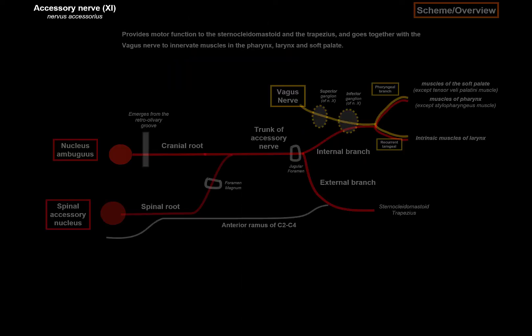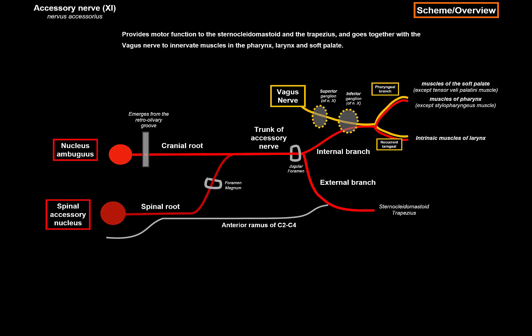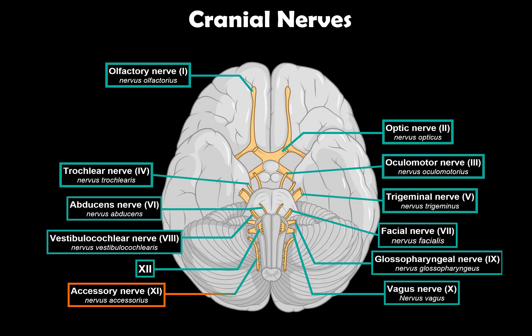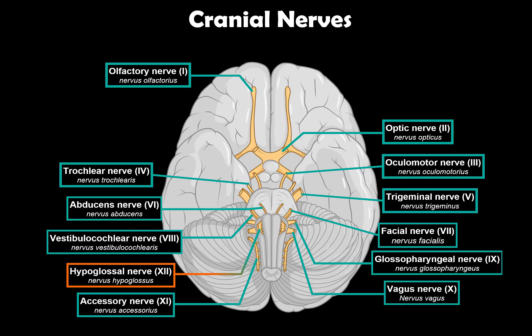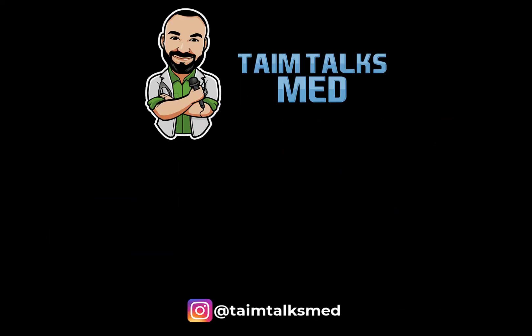That was everything for the accessory nerve. Here again you see the scheme — it's just schematic, not exactly anatomically correct, but I hope it helps you gain a good understanding of this nerve. We've now covered the accessory nerve. The next video is going to be about the 12th and last cranial nerve, the hypoglossal nerve. Thank you so much for watching. If you enjoyed and learned something, please remember to like, comment, subscribe, and turn on notifications. If you're looking for other ways to support, check out the link in the description. Have fun, peace.